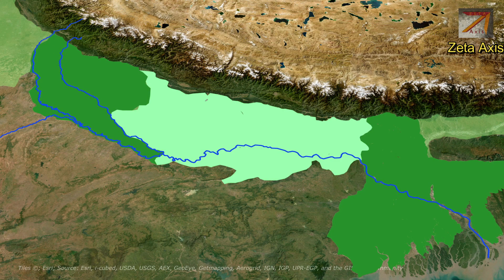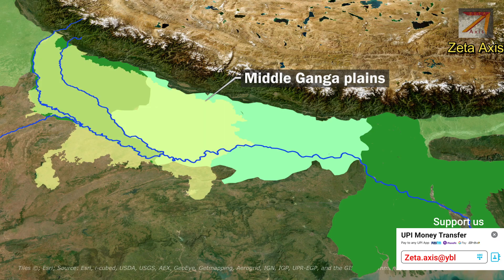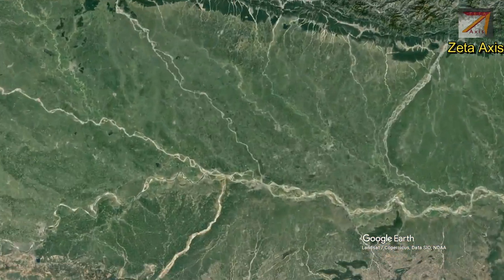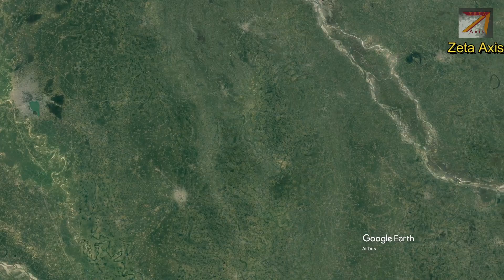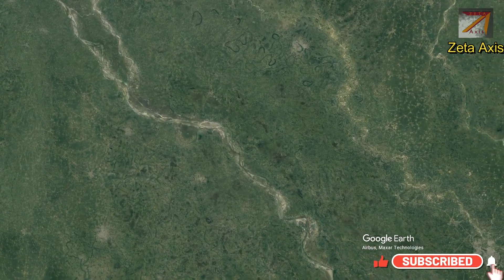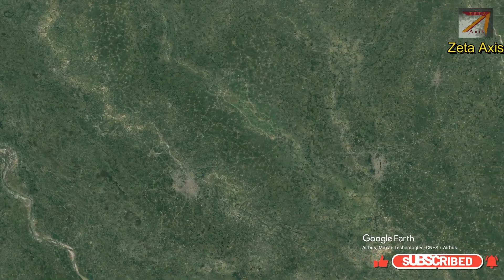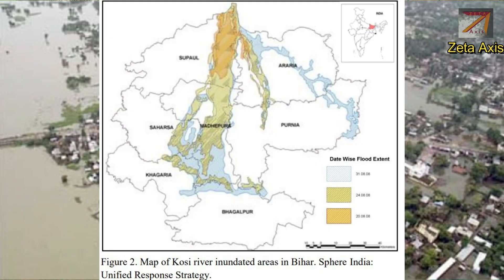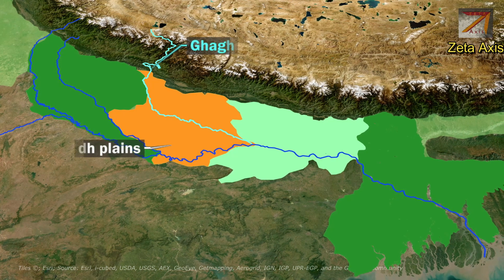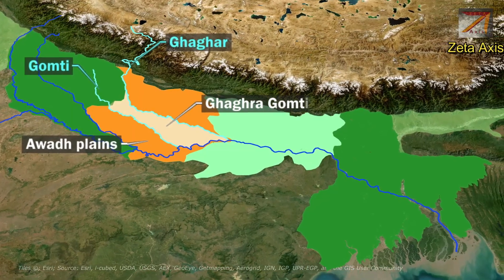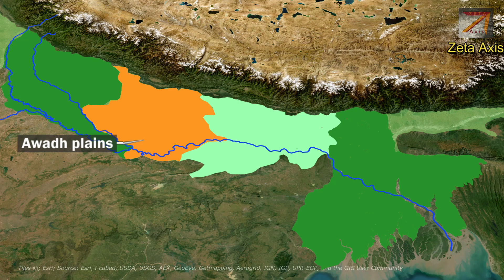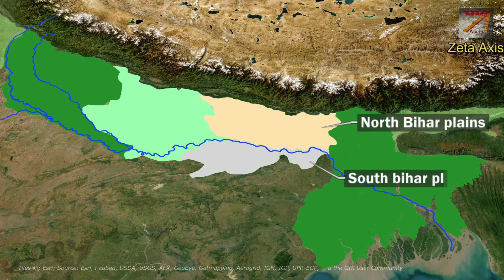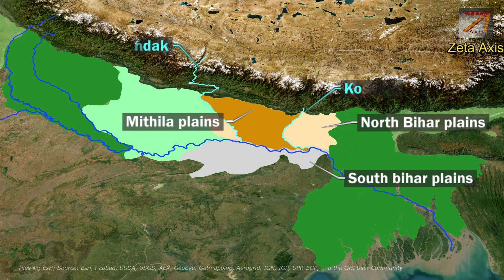The next part is the Middle Ganga Plain, covering the eastern part of Uttar Pradesh and Bihar. It has a very low gradient, so rivers flow sluggishly, forming oxbow lakes, and are known to shift course and cause massive flooding. River Kosi in particular is known for shifting course and causing floods, and is therefore called the 'Sorrow of Bihar.' The Middle Ganga Plain includes the Awadh Plains with the Ghaghra and Gomti Doab region. It also includes North Bihar Plains — the Mithila Plain lying between the Gandak and Kosi rivers — and the South Bihar region, which includes the Magadh Plain located east of the Son River.